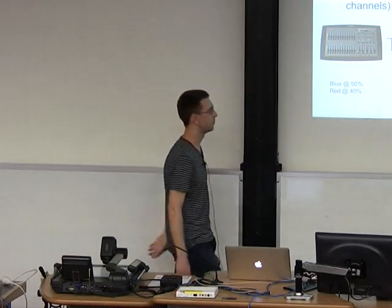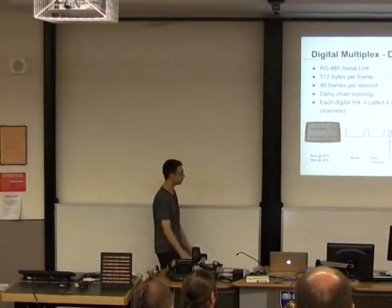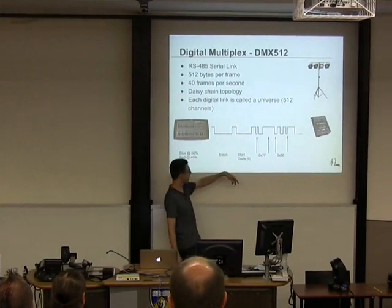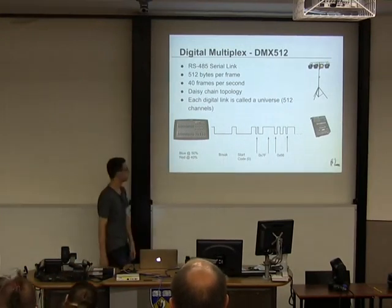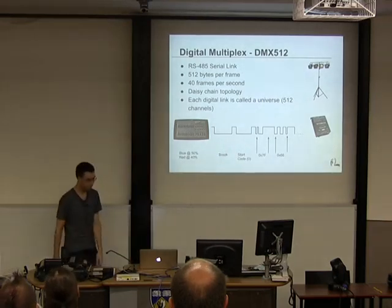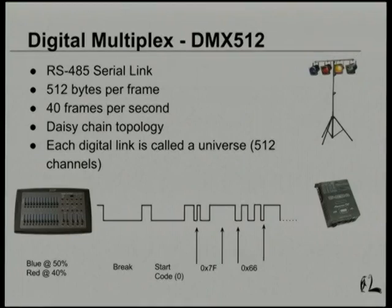You've got your control desk on the left, typically sent down a five-core cable. The encoding is pretty simple: a break triggers the start of the frame, a start code byte — zero means actual DMX data — and then a repeated series of bytes. For example, with a four-channel dimmer and four colored lights, if the operator wants blue at 50% and red at 40%, the desk sends a frame with start code zero and hex data 7F and 66. The dimmer takes the first four bytes and changes its outputs accordingly.